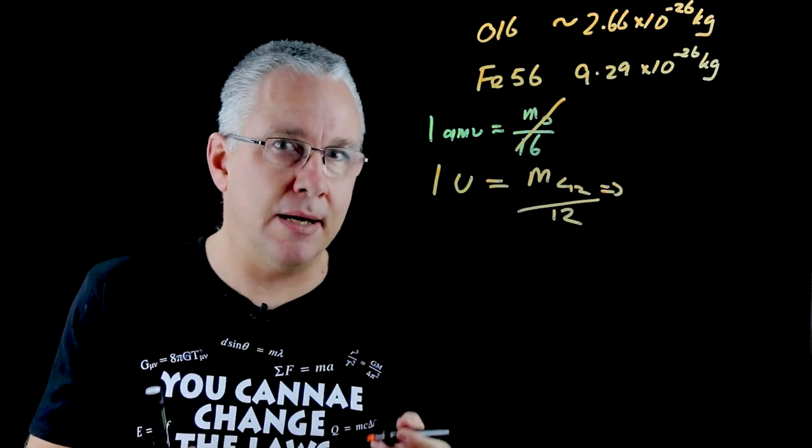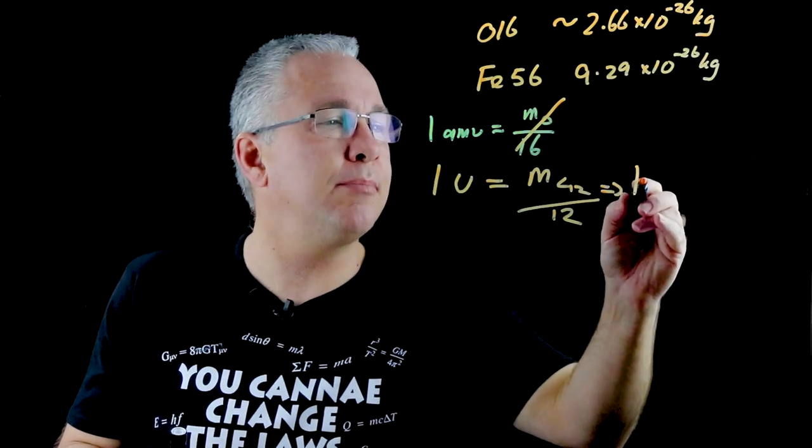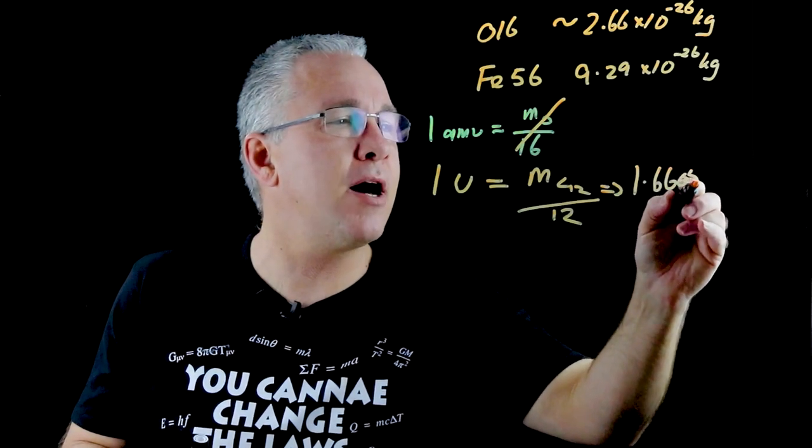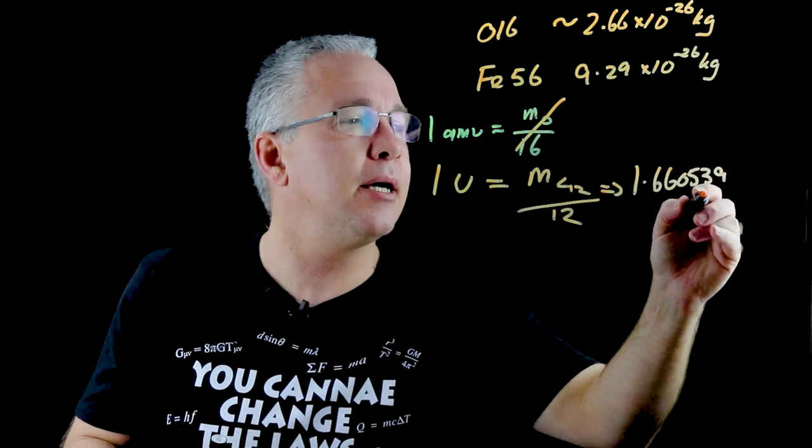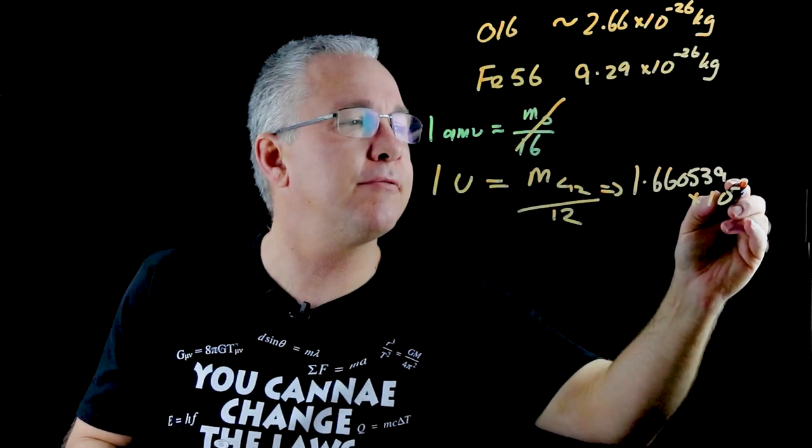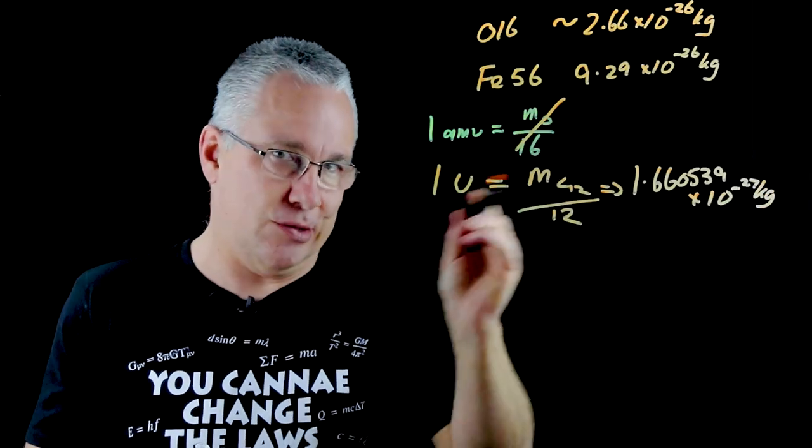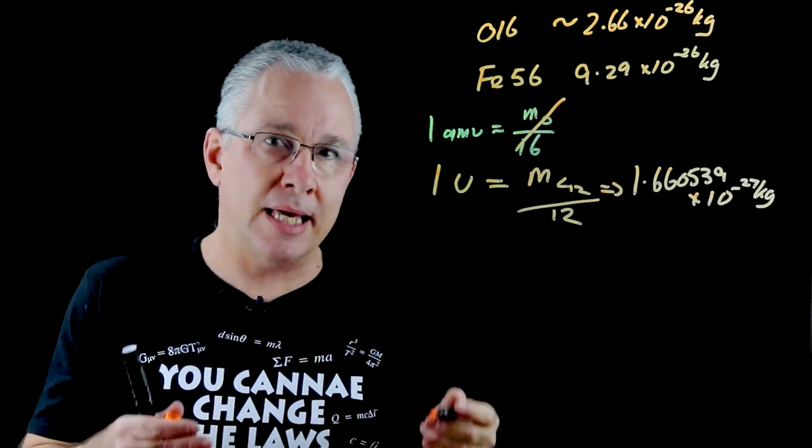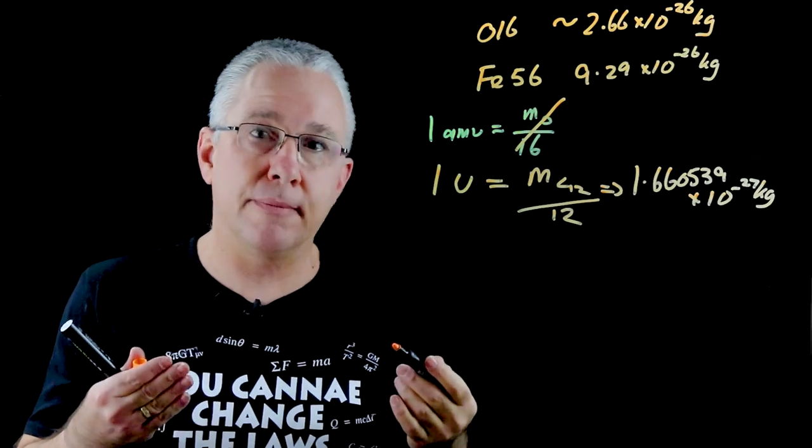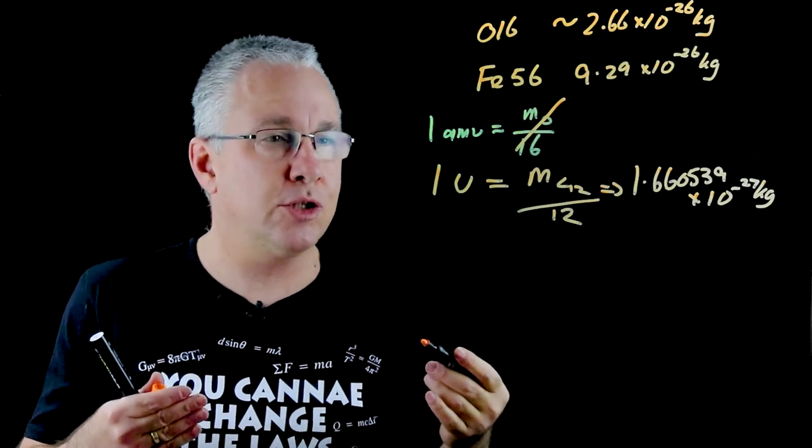So what does 1u actually become? Well it becomes the value of 1.660539 by 10 to the power of negative 27 kilograms. Now that's not the precise number, that's just to seven significant digits.